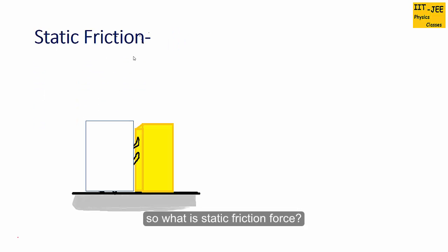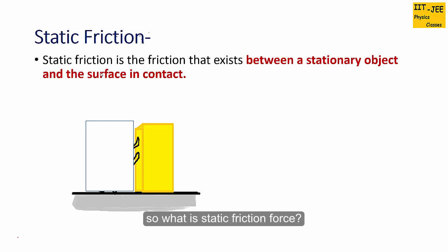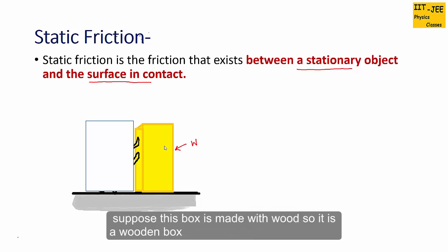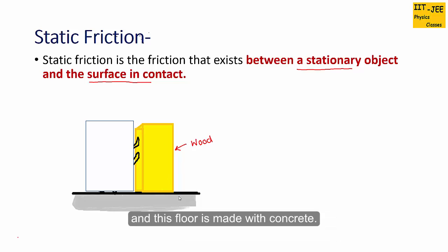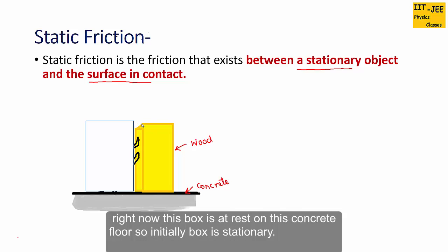So what is static friction force? Static friction force is the friction force that exists between a stationary object and the surface in contact. Suppose this box is made with wood — it is a wooden box — and this floor is made with concrete. Right now this box is at rest on this concrete floor, so initially the box is stationary.